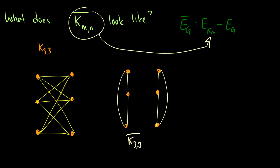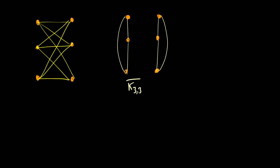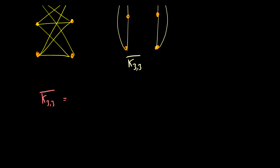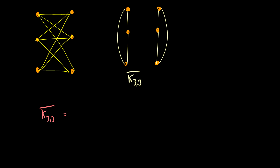Let me redraw the complement of k_{3,3} in a different way to give more insight. We had these three vertices on each side. When we redraw them, we see that the complement of k_{3,3} is really just two copies of k_3 — one for each group of three vertices. It's pretty cool! The complement of k_{3,3} is two disjoint copies of k_3.